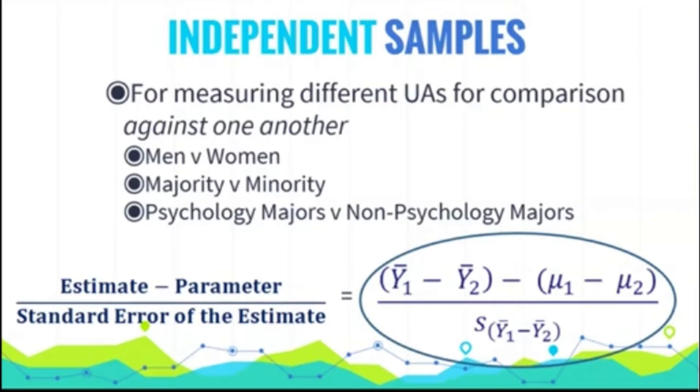So this is going to take a slightly different version because now our estimate is, in fact, the difference between means. So that means that the sampling distribution is the sampling distribution of the difference between means, not just the sampling distribution of the mean.